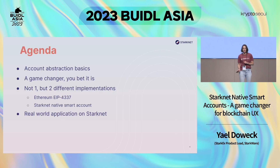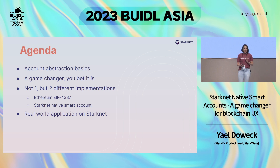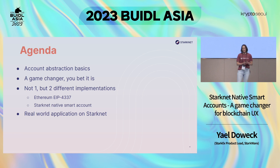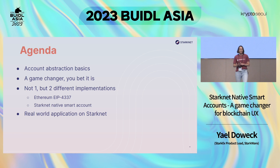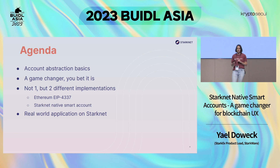This is the agenda for today. First I'm going to explain what account abstraction is, and then convince you that this is a game changer. Then we'll go into technical details — I'm going to show you two different implementations of account abstraction. The first is done by Ethereum, also called EIP-4337. Then I'll talk about what we did in StarkNet with native smart accounts and why we chose to do it this way. Finally, I'll show you three real-world applications that exist today on StarkNet using native smart accounts.